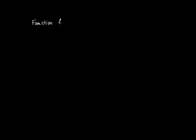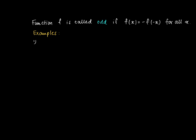When you have an even function which has some symmetry, then of course you need to have something called an odd function as well — and this is correct. A function f is called odd if f(x) equals minus f(-x) for all x in the domain of the function.